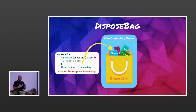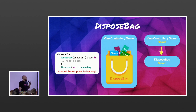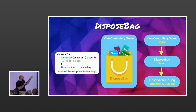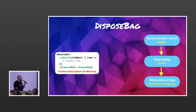Whenever the view controller deinits, it calls the disposeBag's deinit, which causes all of those subscriptions to be deallocated as well. This creates a very tight ownership model for memory — the view controller owns the bag, which owns all the subscriptions it needs. The view controller deallocates, then the observables terminate and dispose, then the disposeBag is released, and finally the view controller deallocates. That's why the disposeBag is a very powerful tool for memory management in Rx code.